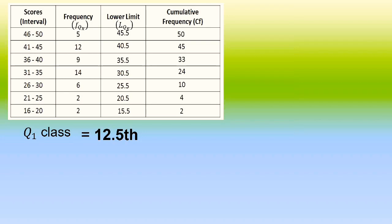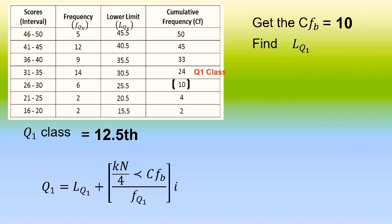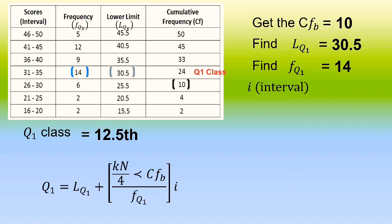After we have identified the Q sub 1 class, we identify the values in our formula. The less-than cumulative frequency of the class before the Q sub 1 class is equal to 10. The lower boundary of the Q sub 1 class is 30.5. The frequency of the quartile 1 class is equal to 14. The class interval is equal to 5, counting 31, 32, 33, 34, and 35.